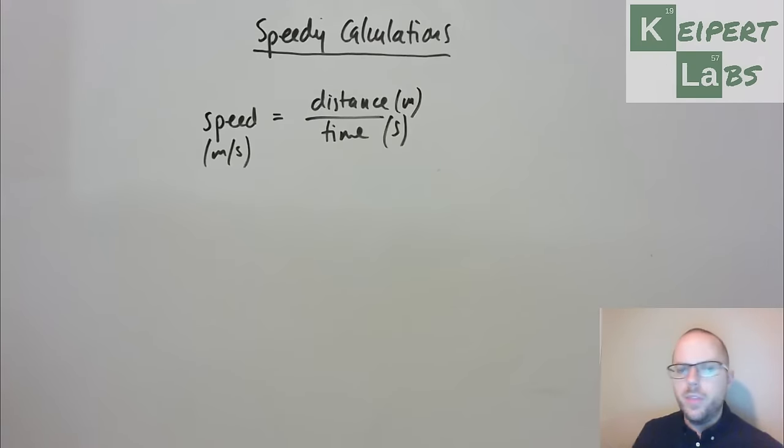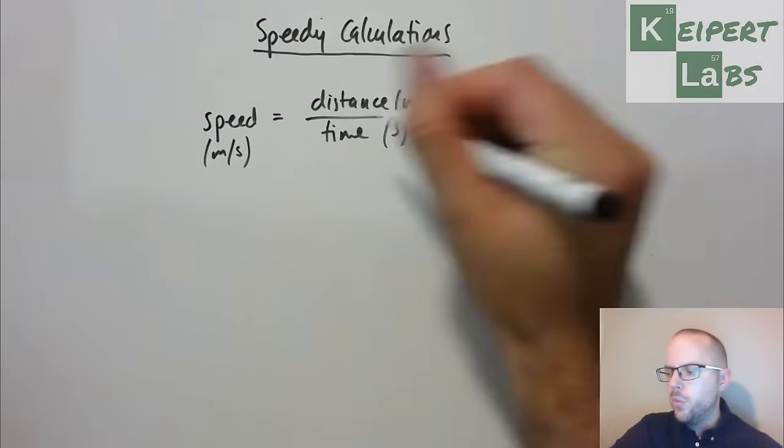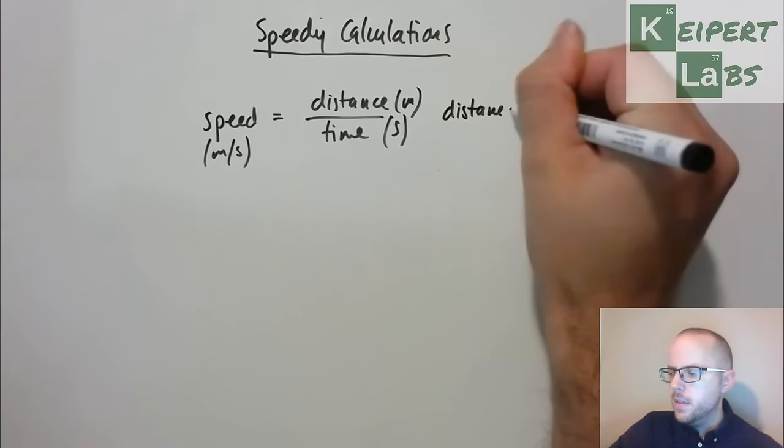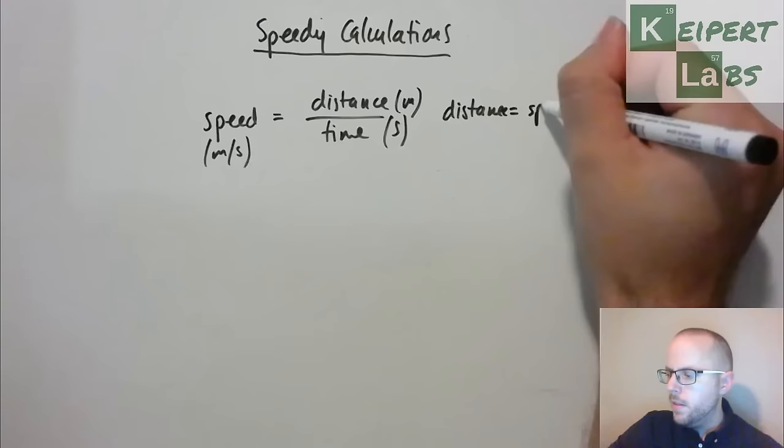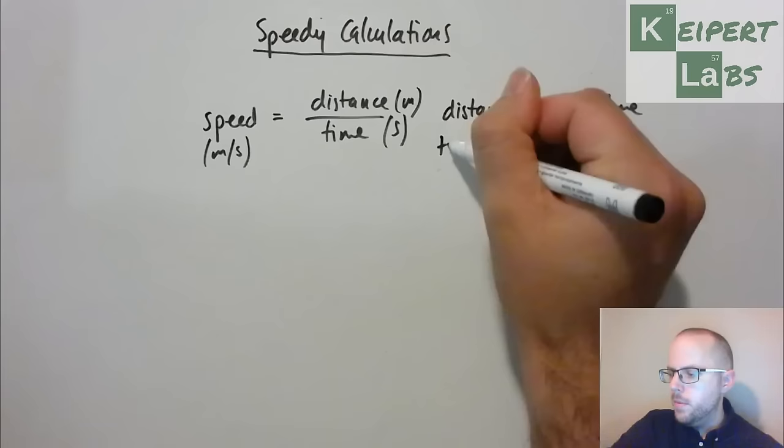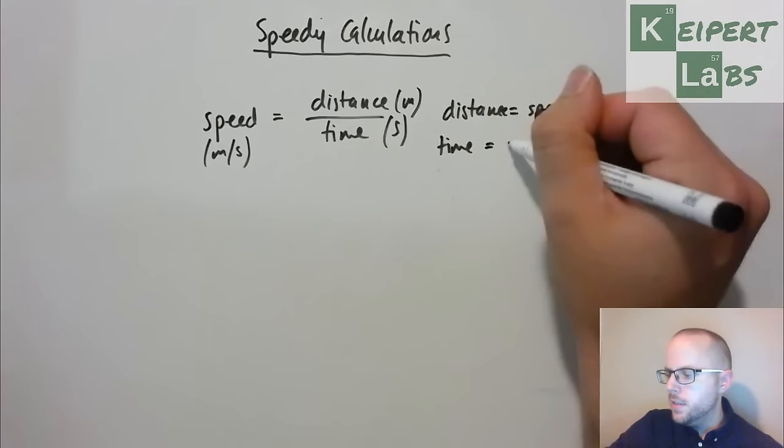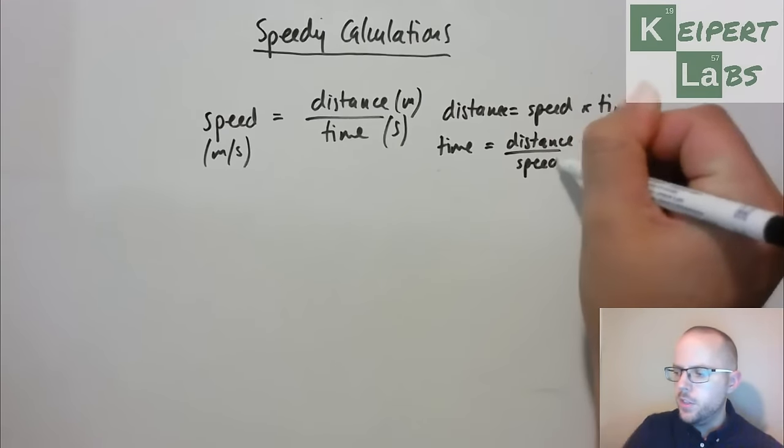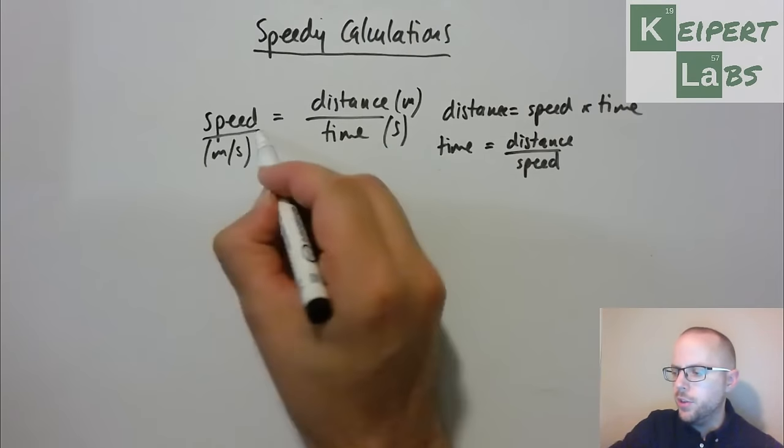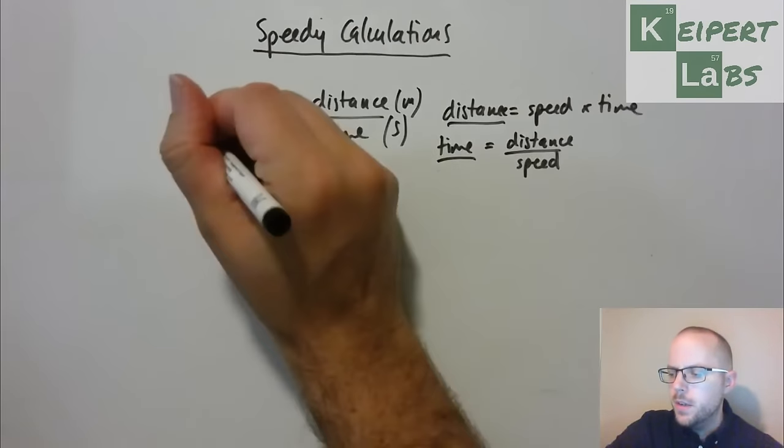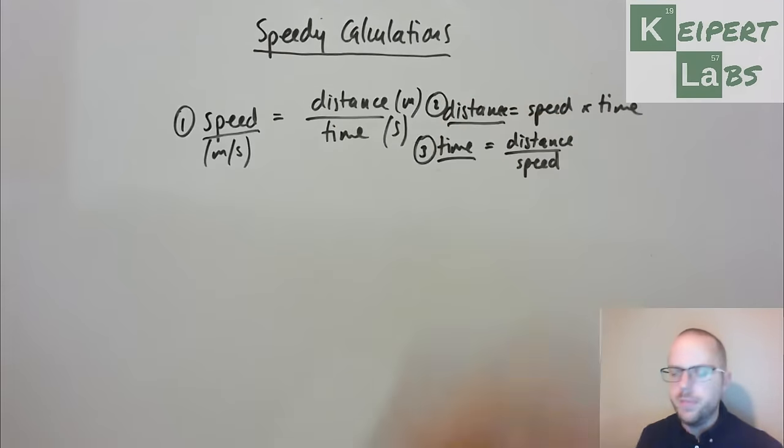And then in that video we also looked at this idea that we can rearrange this formula as we need to, to get either distance equals speed times time, or we can even make it to be time equals distance divided by speed. So depending on which thing that we need to calculate, if we're trying to calculate speed or trying to calculate distance or time, we would use one of these versions of our formula.